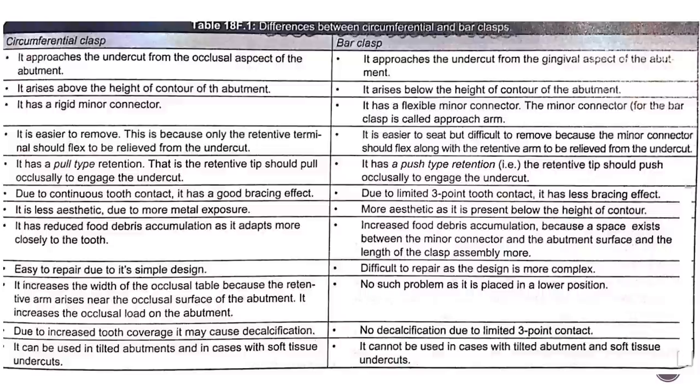This was an overview of direct retainers — which direct retainers are used in which conditions. Circumferential clasps are mostly used; bar clasps are used when aesthetics are more important. I hope you found this video helpful. Please like, comment if you need any topics covered, share with your friends, and subscribe to the channel. This video combines two to three textbooks to make things simple.